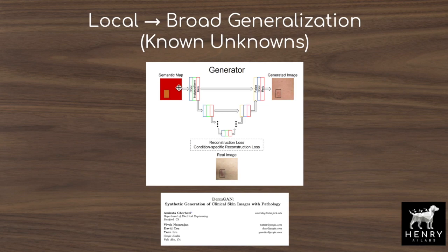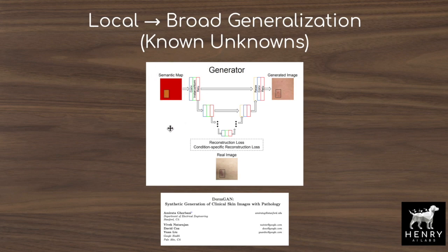In DermGAN, there are images of skin lesions with various known unknowns in the data set — the size of the skin lesion, the lighting conditions, and the background skin color. Using a pix2pix generative model (image-to-image translation), similar to GauGAN generating photorealistic landscapes from semantic maps, they use semantic maps to increase the size of the skin lesion, change the skin color, and change the lighting conditions to account for the known unknowns in the data set.